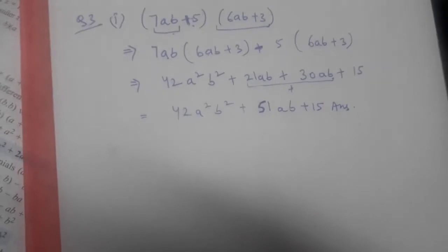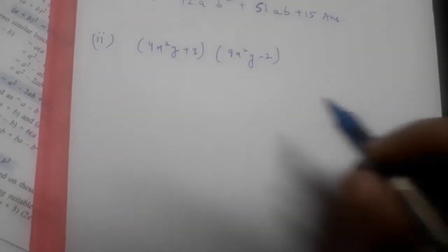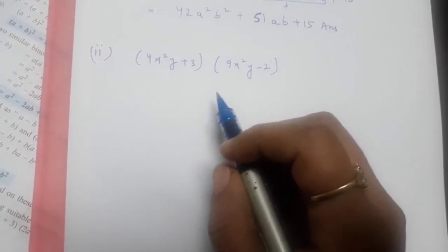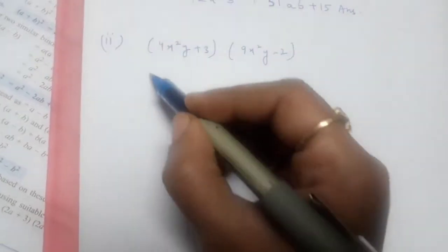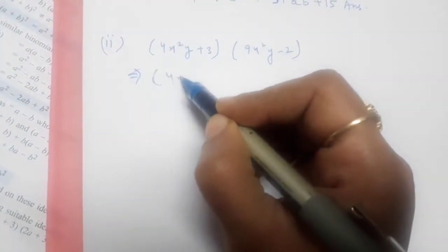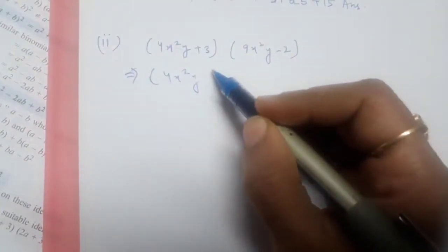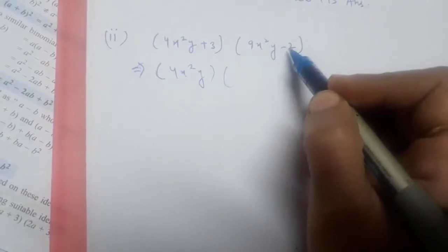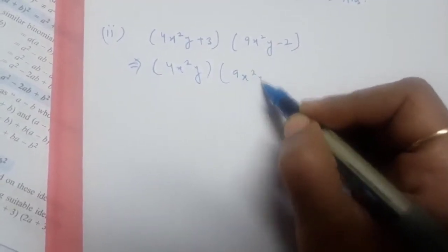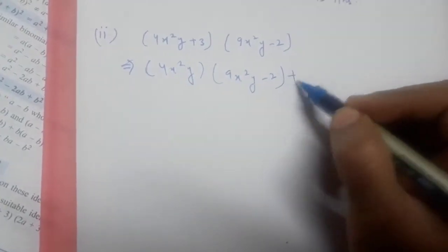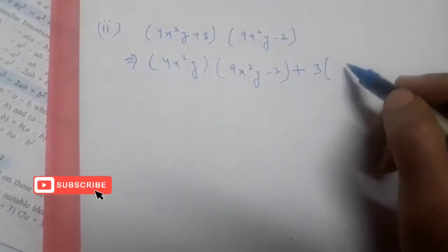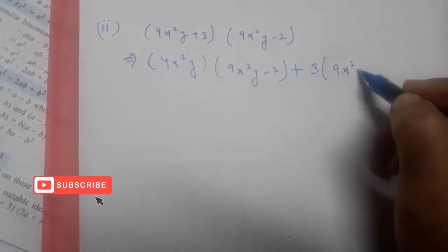Now come to the second part. So what is the second part? (4x²y + 3)(9x²y − 2). Our next step: 4x²y will first get multiplied with the whole term (9x²y − 2), then positive sign, then 3 will be multiplied by the whole term (9x²y − 2).